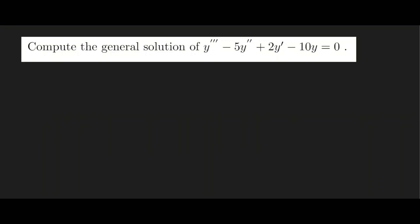We want to find the general solution of this differential equation. It is a third order, homogeneous, and linear equation. So let's write down its characteristic polynomial. Assuming the solution form y equals e to the rt, we're trying to find the roots. The characteristic polynomial is r cubed minus five r squared plus two r minus ten equals zero.